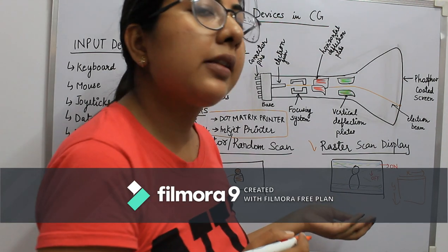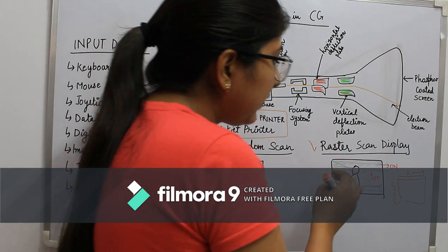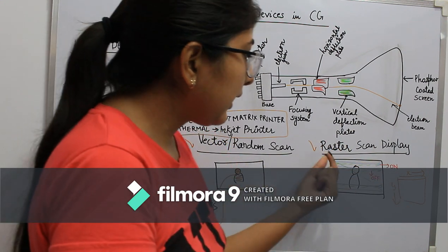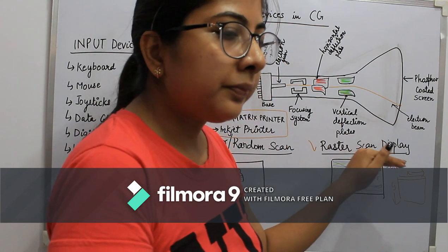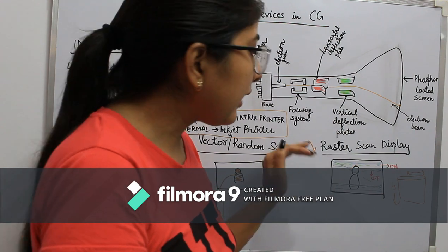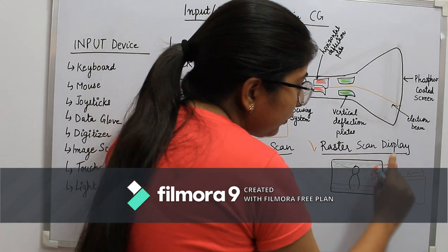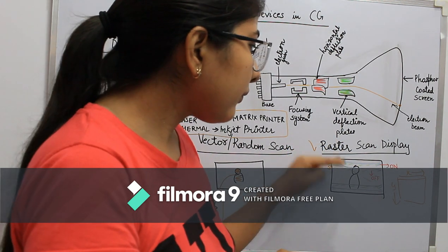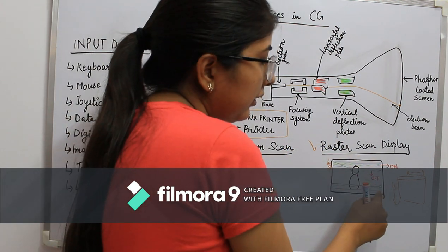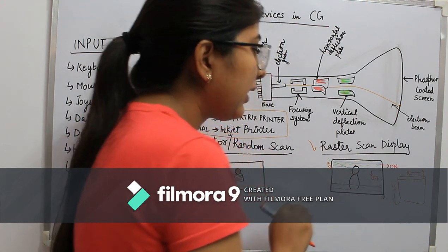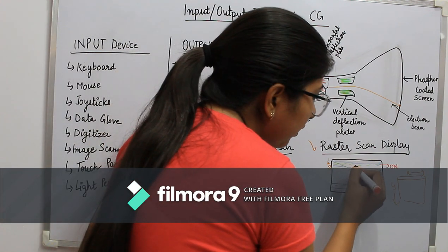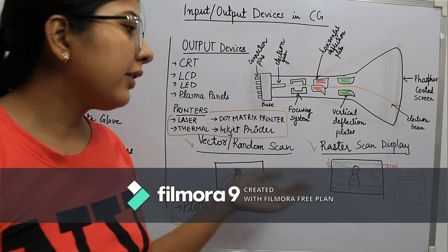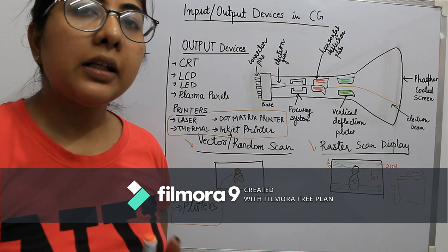The next concept is raster scan display, which is used in CRT. In CRT there is a fluctuation — the display glows the first line, then leaves the next and glows the one after. For example, odd-numbered lines glow first, then the ray traces back and glows the rest of the lines. So to draw any shape, the whole screen needs to be scanned. These are the two basic concepts of random scan and raster scan which we need to understand.